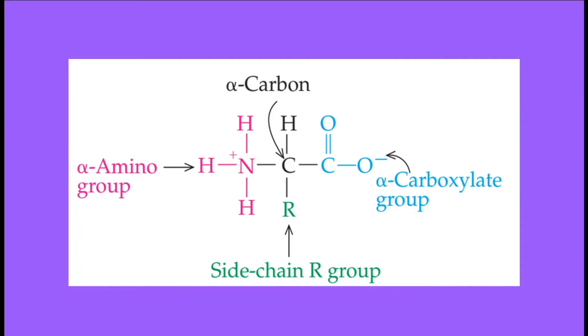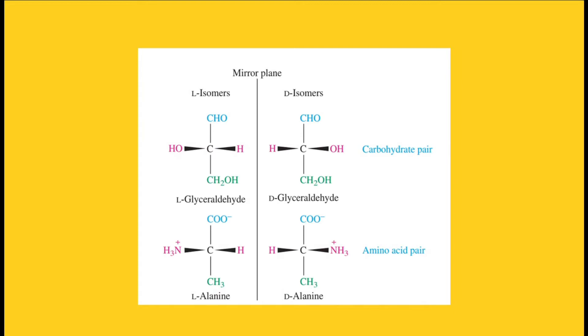It has four different groups attached to the central carbon atom which make it chiral, meaning it has handedness. With few exceptions, the amino acids found in nature and in proteins are L-isomers. Same with the case of monosaccharides, nature favors one mirror image over the other. You would know the handedness or the chirality of the amino acids by looking at the position of the amino group. In alanine, since the amino group is on the left, then this one is the L-isomer.